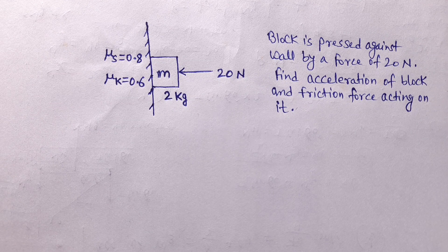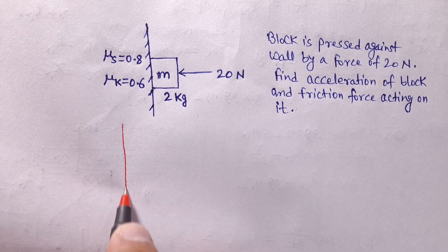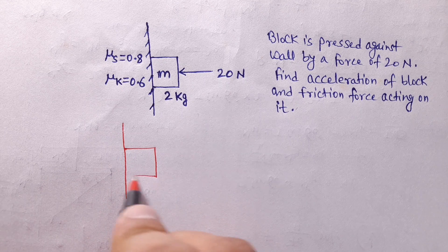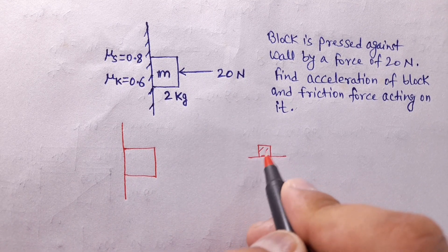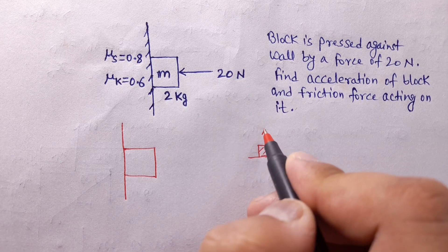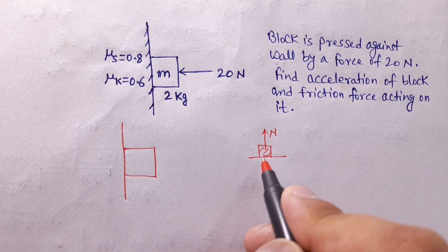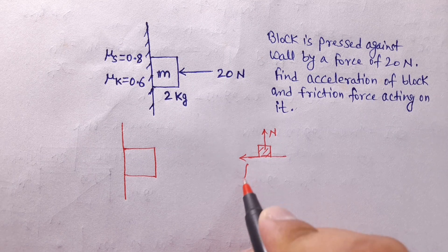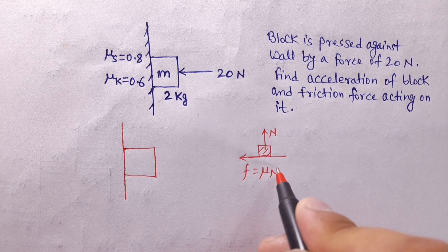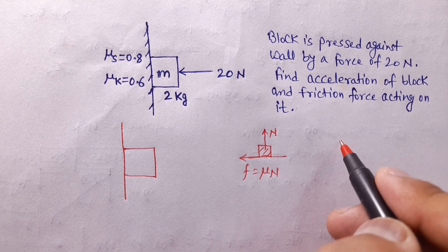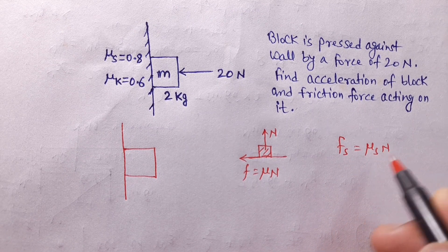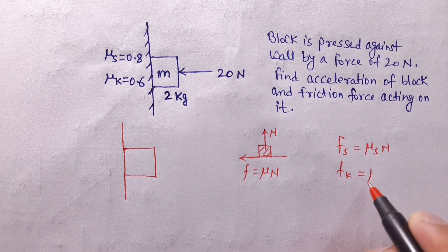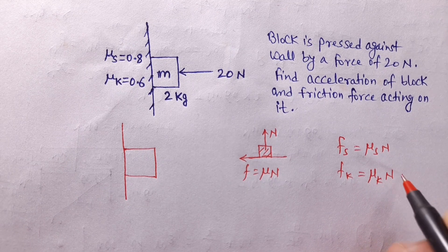To solve this, we need to understand the basic concept. When a block is placed on a surface, friction force is F = μN. For static friction, F_static = μ_static × N, and for kinetic friction, F_kinetic = μ_kinetic × N (normal reaction).